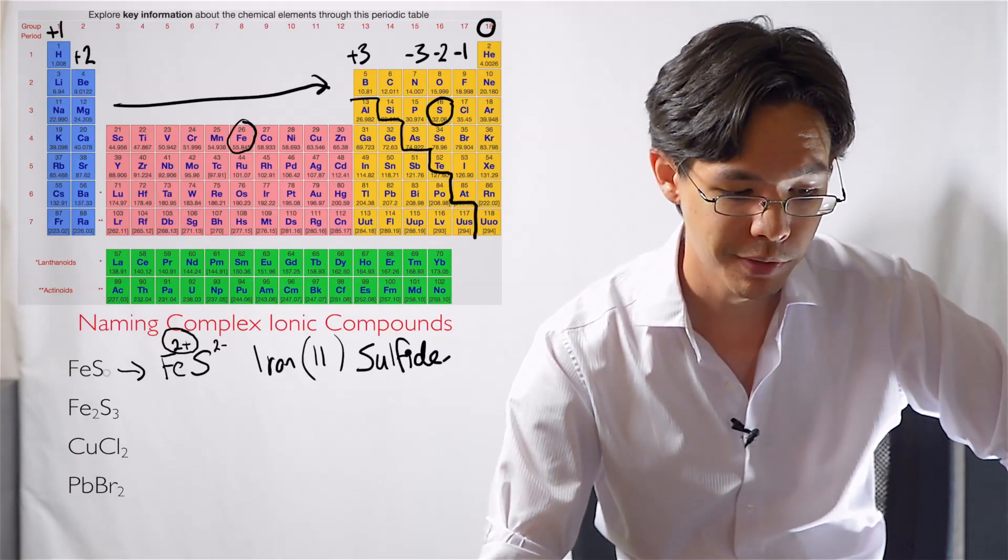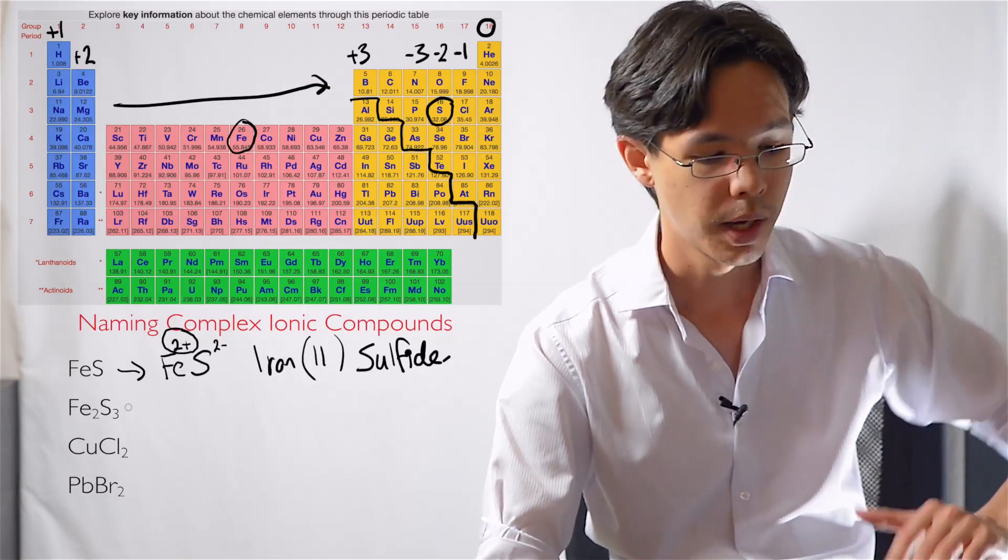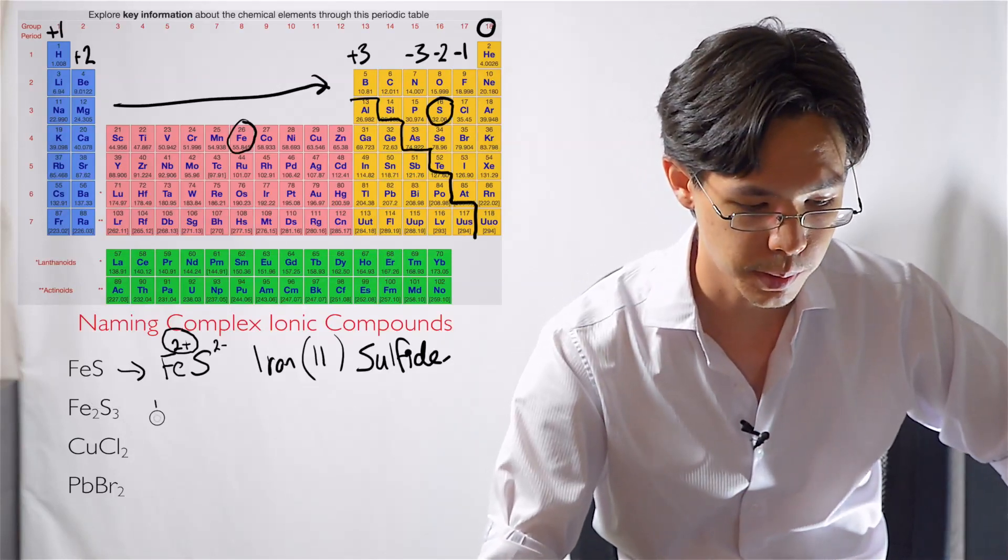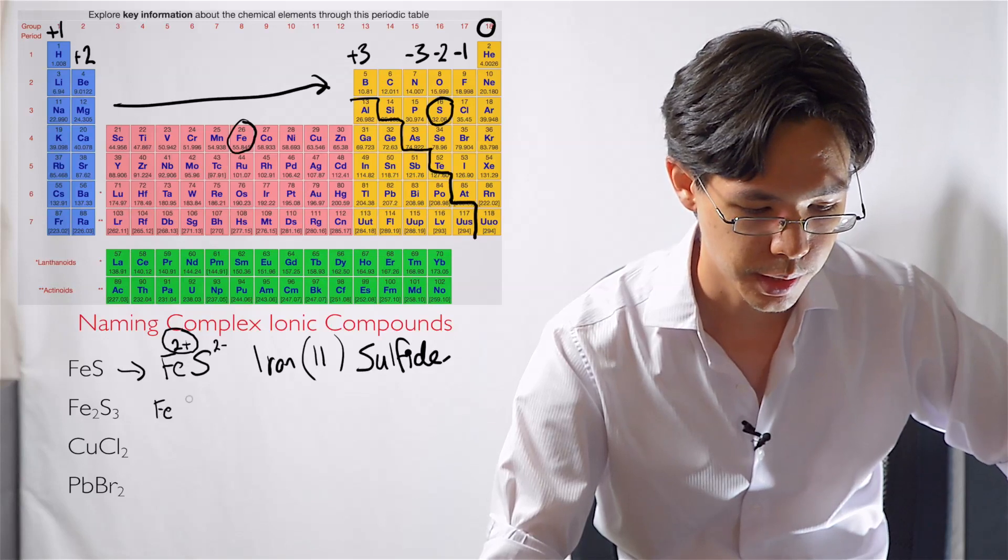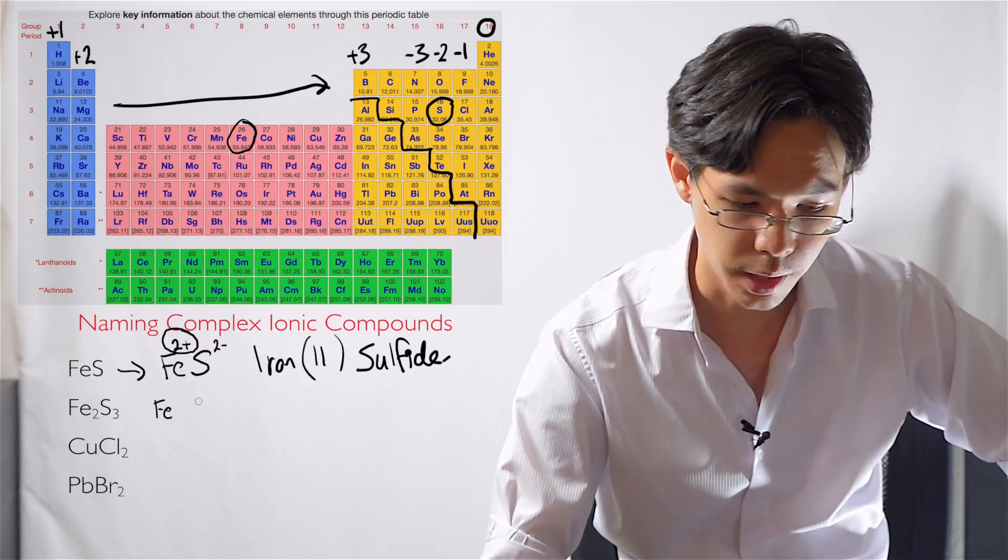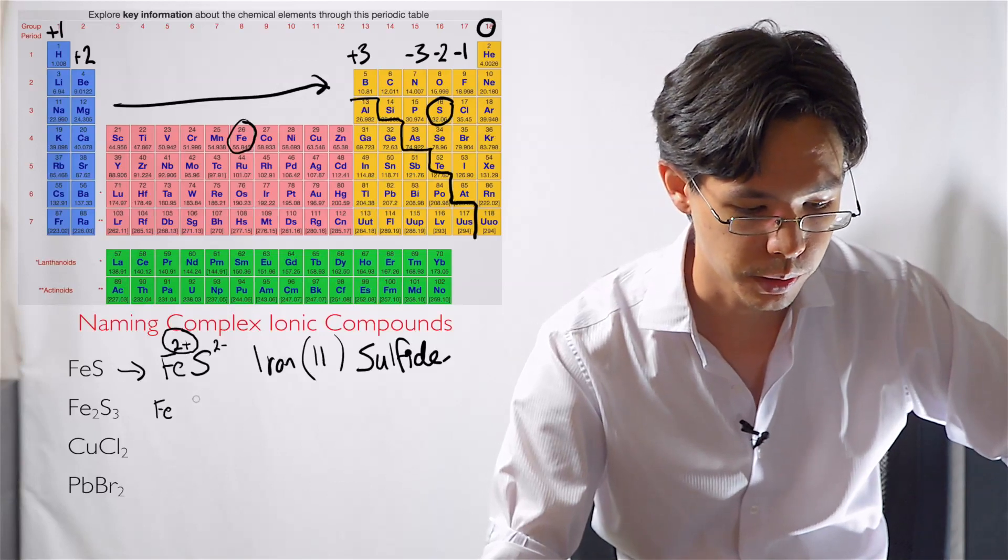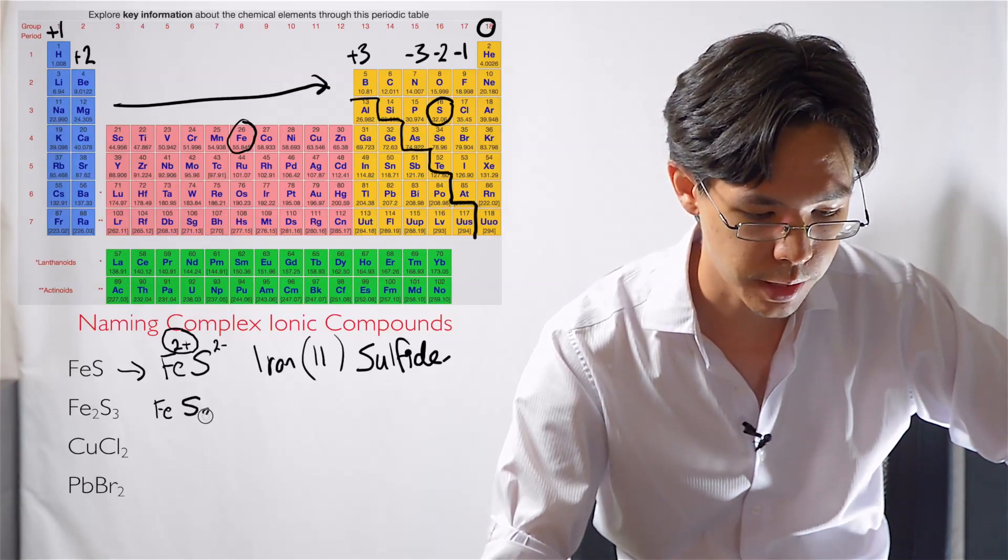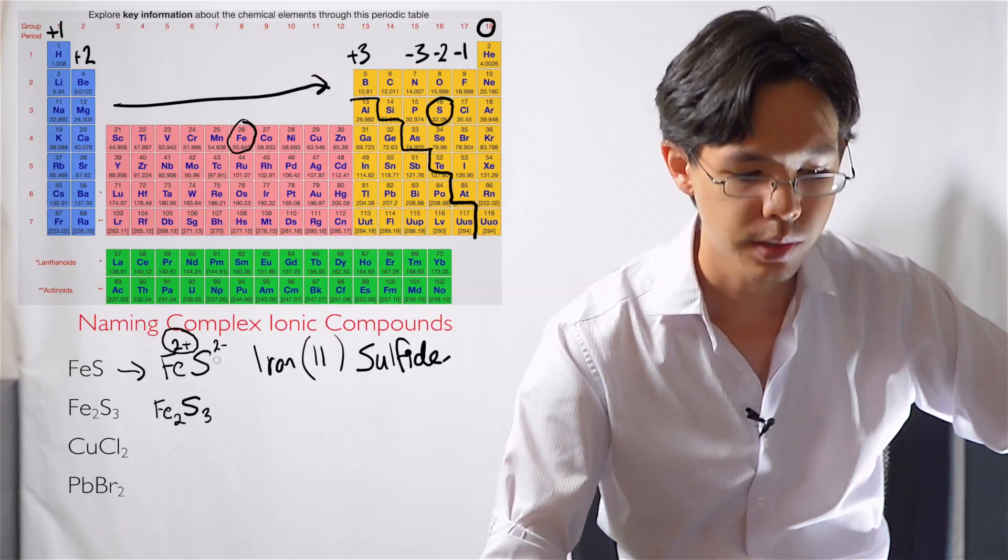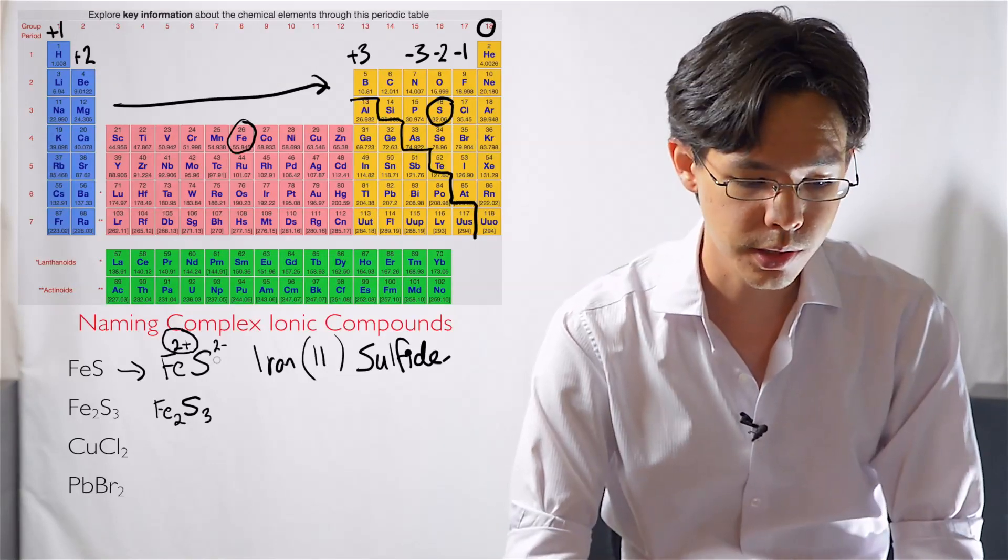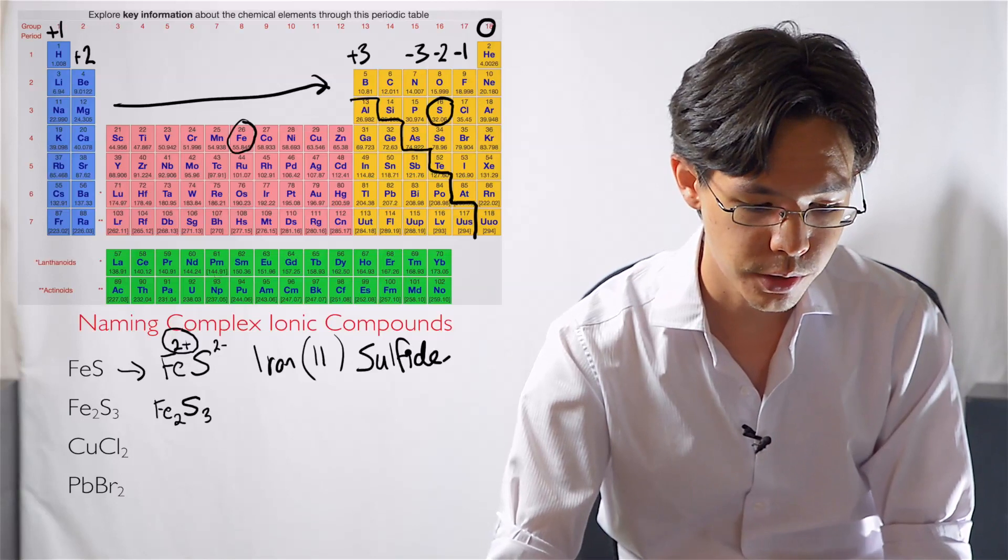Alright, let's do the next example. Here we've got iron again, and sulfur. However, it's a slightly different compound. Let's do it again. So the process is, we write down our atoms one at a time. There's iron. We don't know what charge it has. It could be two or plus three. We don't know. We have three sulfur atoms. So these three sulfide ions,